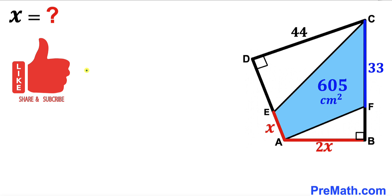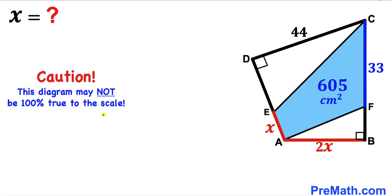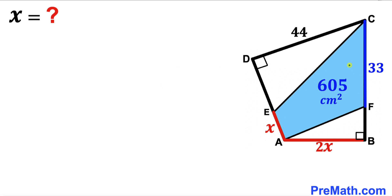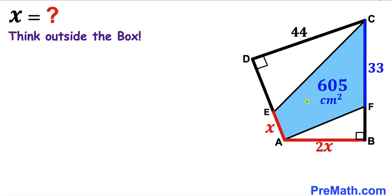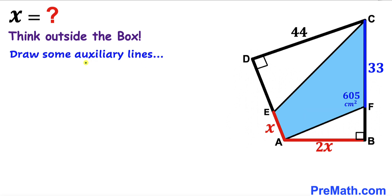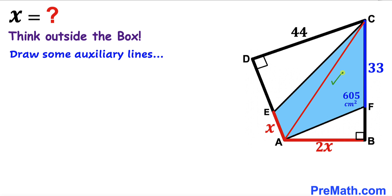Please keep in mind that this figure may not be 100% true to scale. Let's get started. We are going to think outside the box and manipulate this blue quadrilateral by drawing some auxiliary lines. I'm going to connect point A and point C as you can see in this next step.